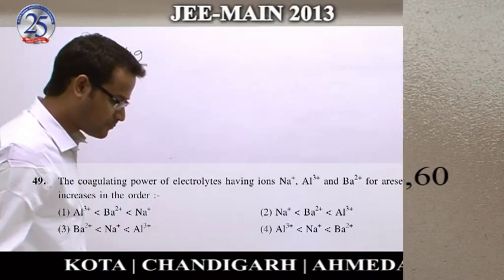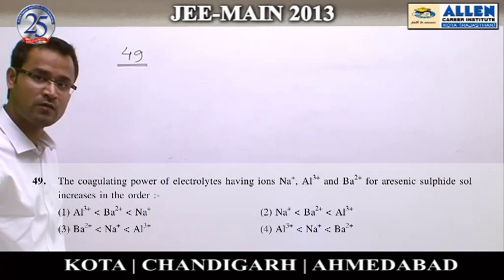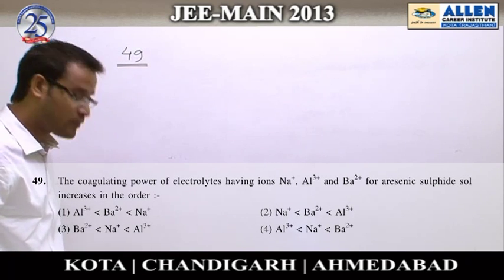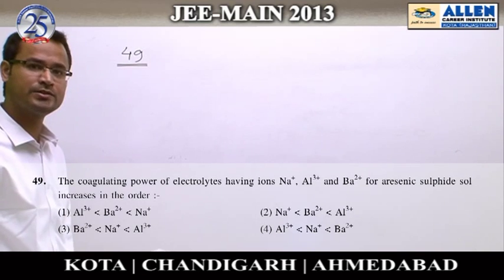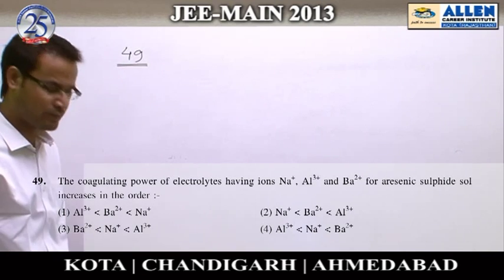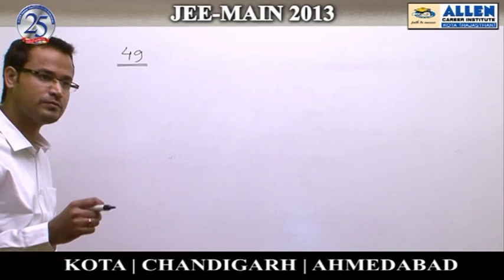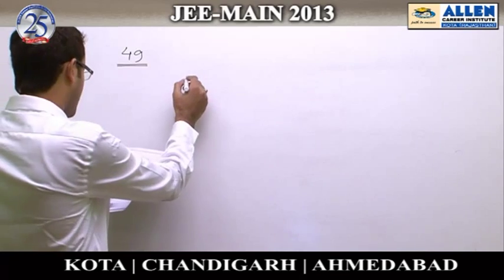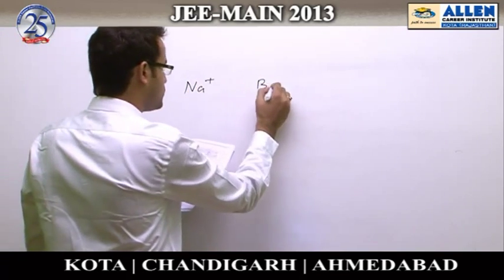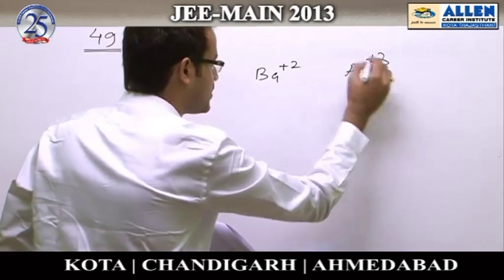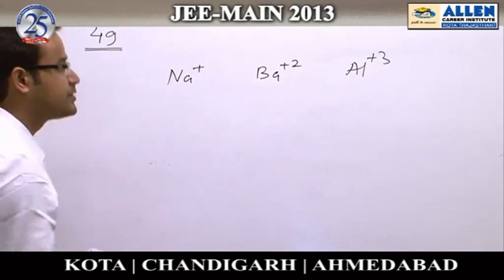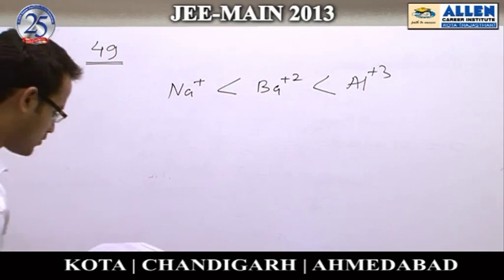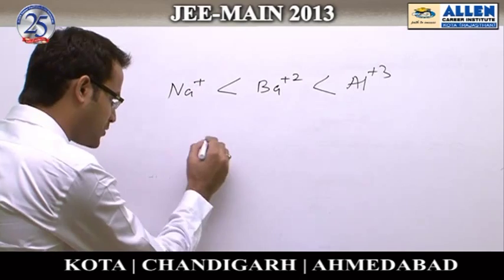Question number 49: Arsenic sulfide is a negatively charged sol. To compare the coagulation power of the given cations, according to the Hardy-Schulze rule, as the valency of an ion increases, its coagulation power increases. The given cations are Na⁺, Ba²⁺, and Al³⁺. Comparing their valencies, aluminium has the highest coagulation power among all three. The correct option is 2.